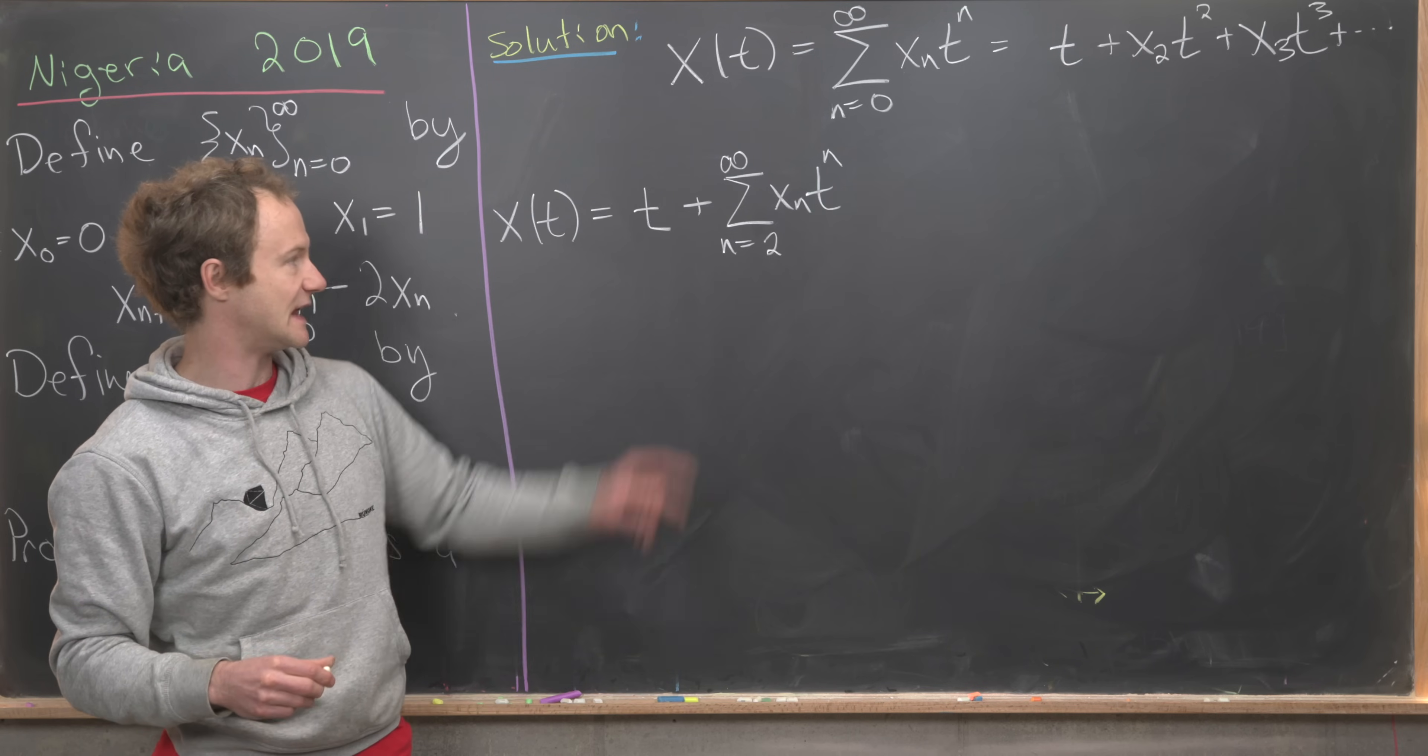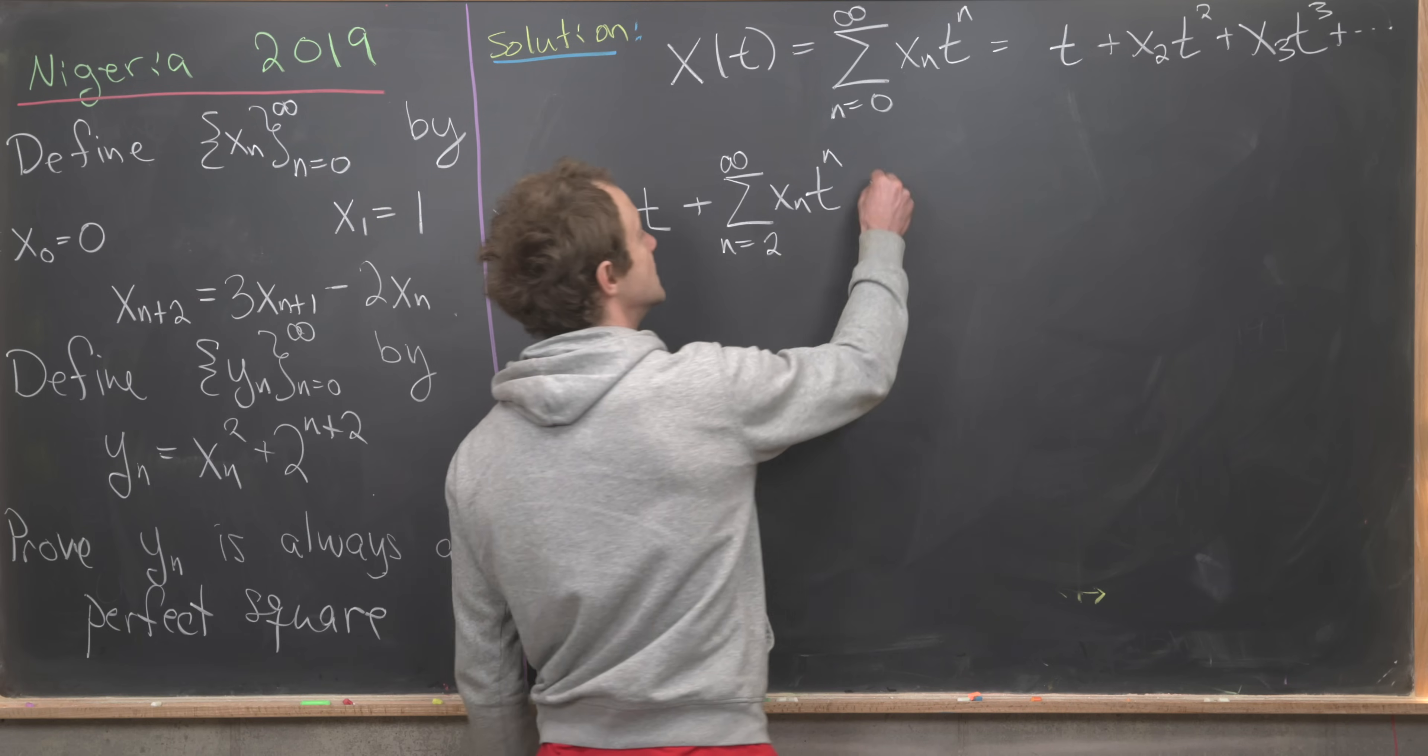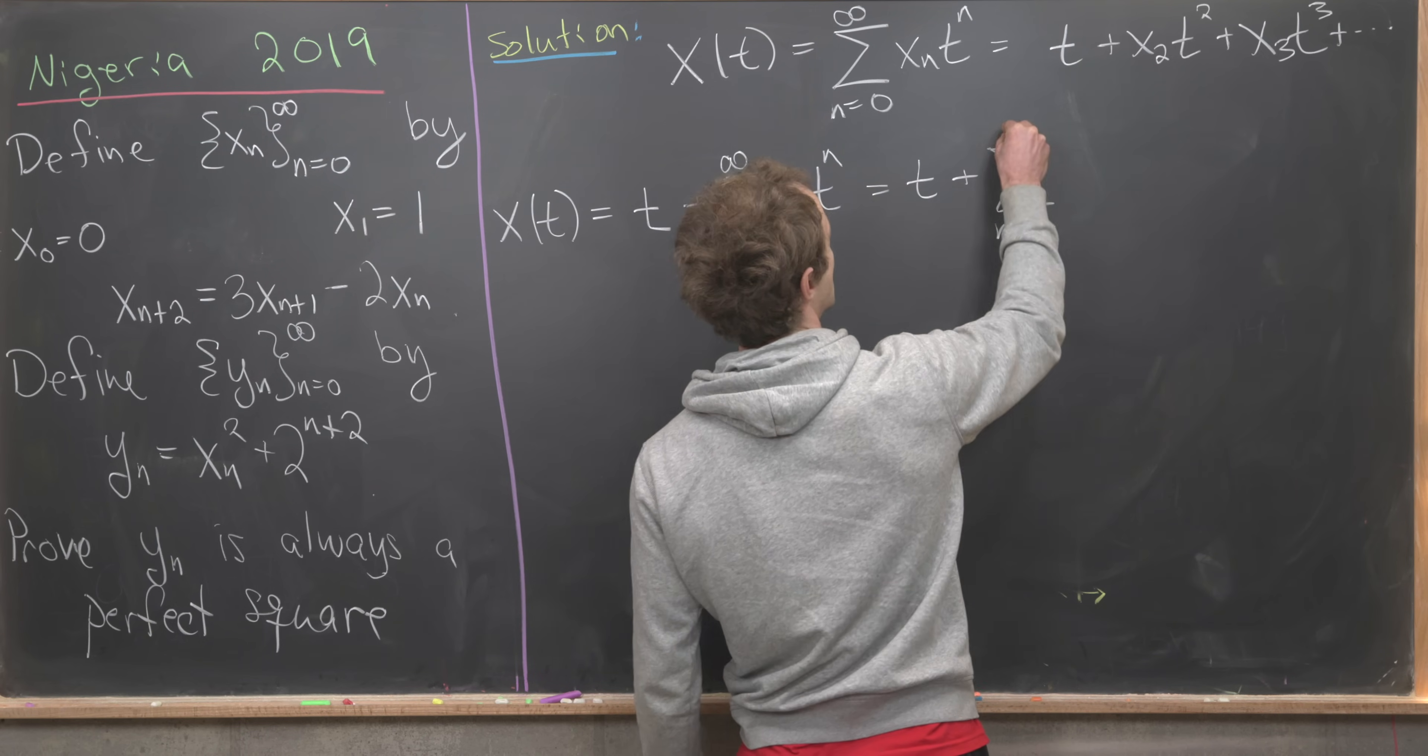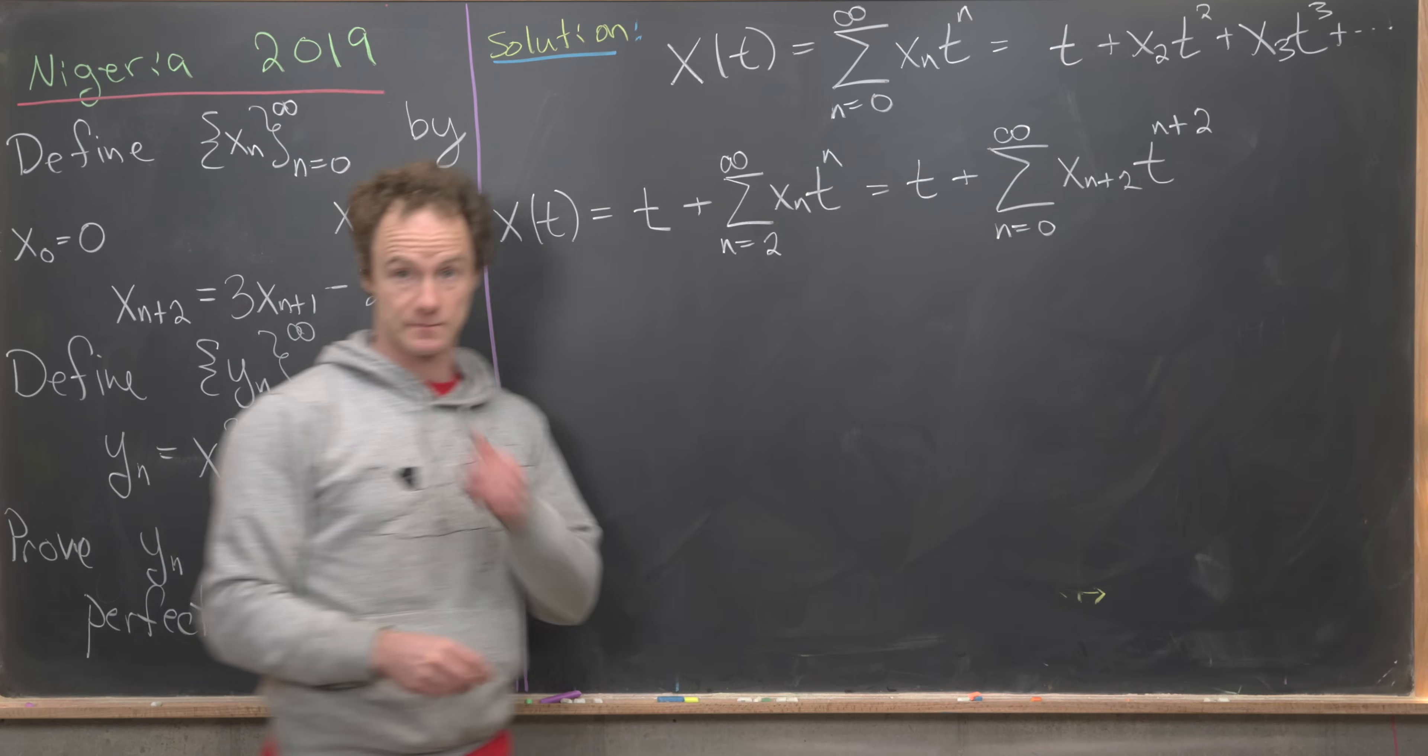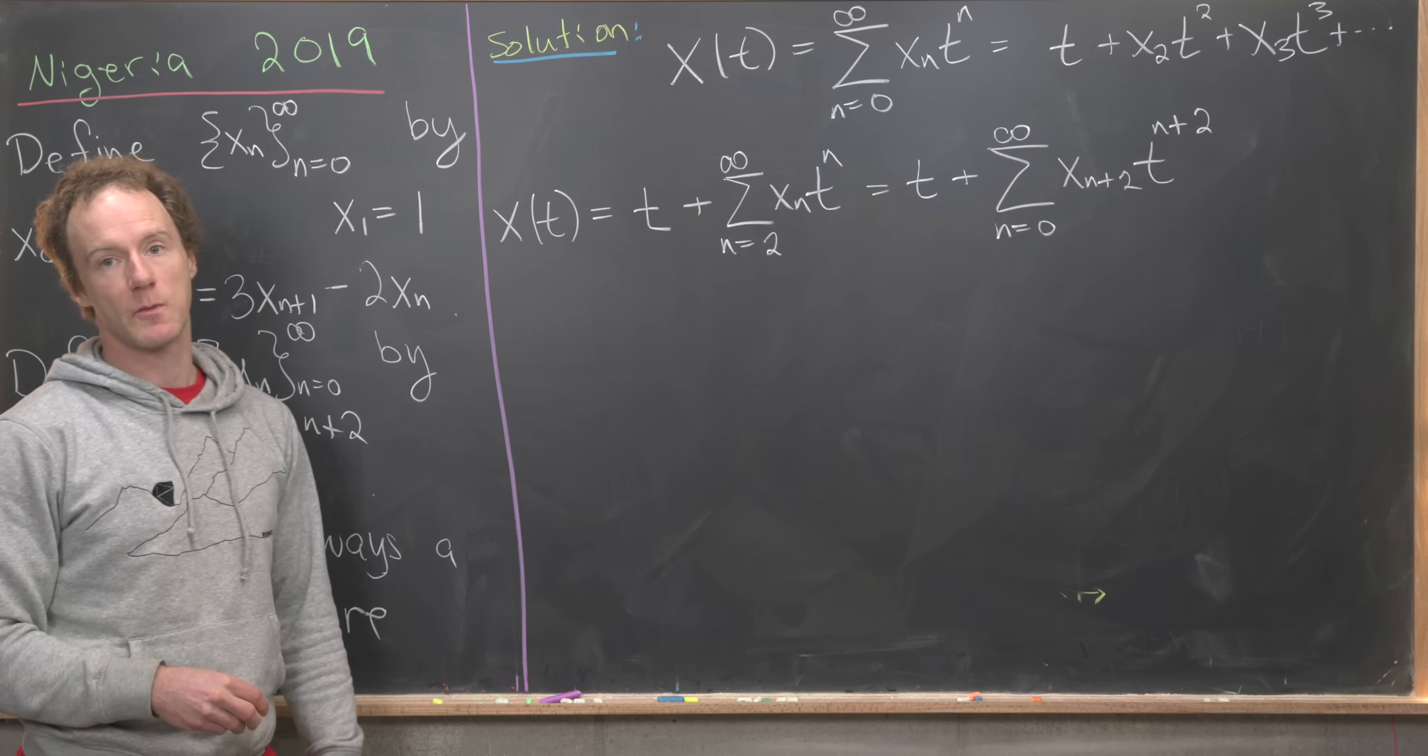Since we're starting at n equals 2, I can re-index so my index looks like n plus 2 instead of n and that'll help us apply this recursion. So here this is going to be t plus the sum as n goes from 0 up to infinity of x sub n plus 2, t to the n plus 2. I just replaced n with n plus 2. Notice that changes my starting point from 2 to 0.